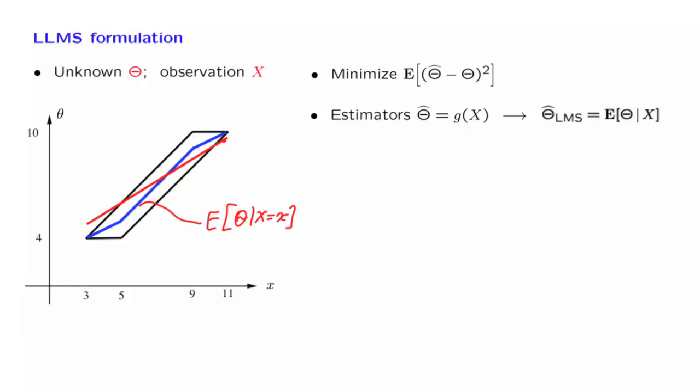But what if we impose it as a constraint that we will only look at estimators that are linear functions of the data? What does that mean? Mathematically speaking, it means that we will only consider estimators that depend linearly on the data X.